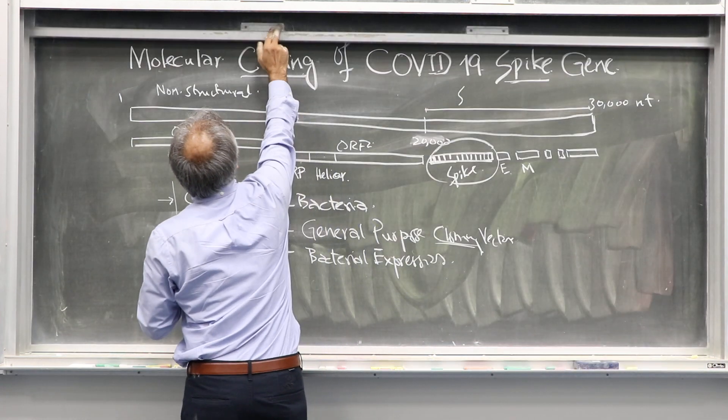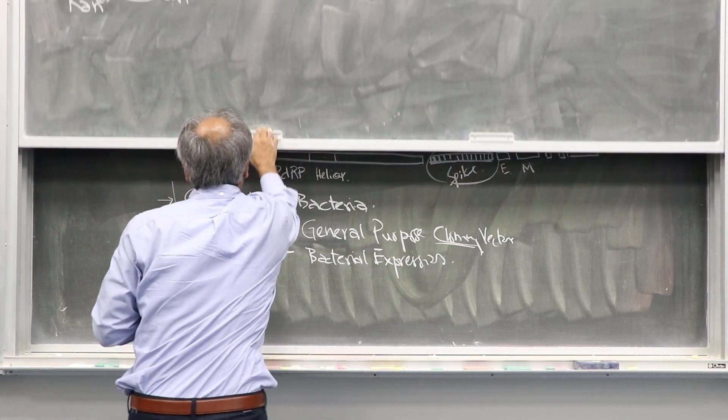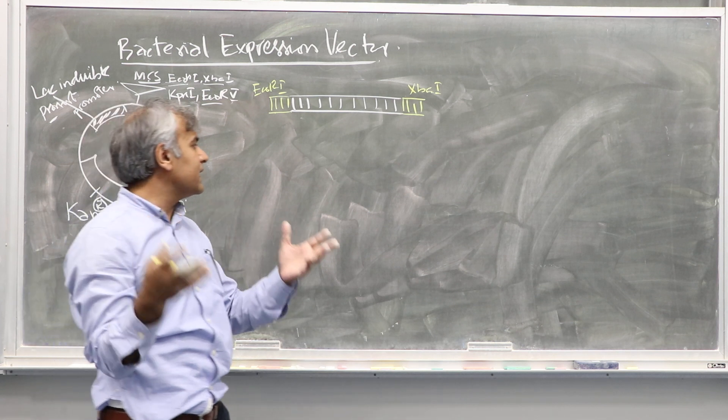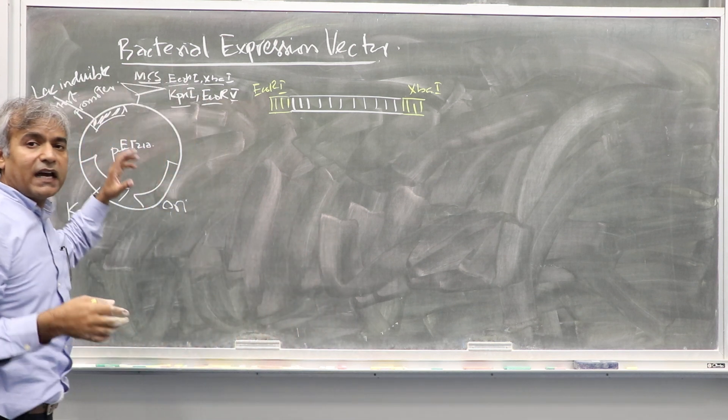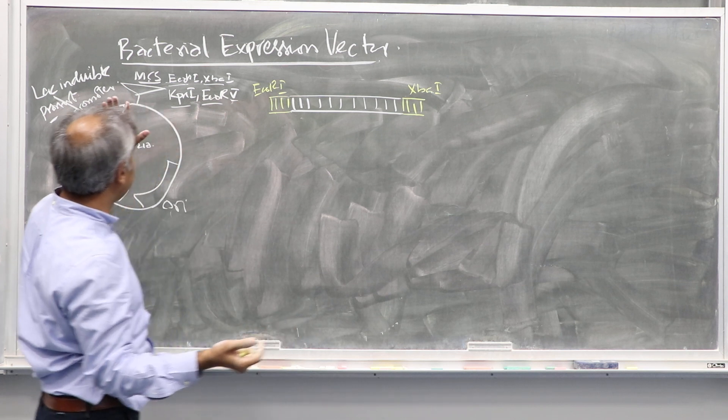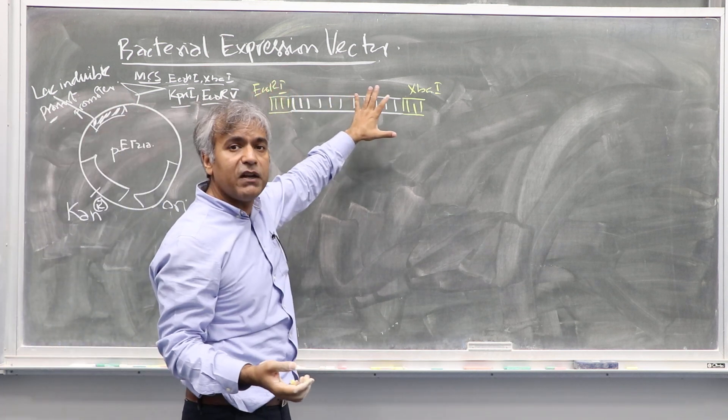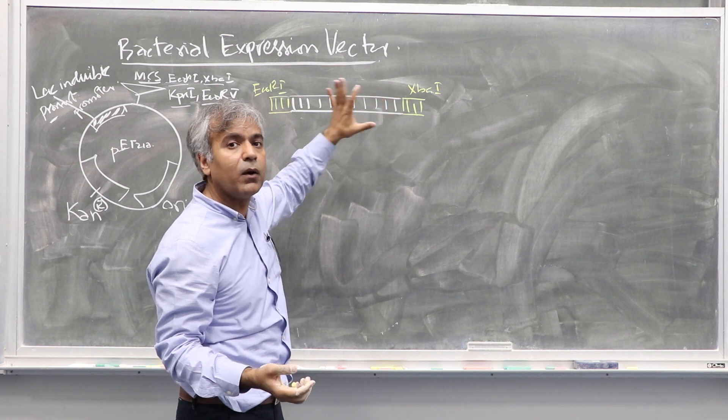Now what we are going to do once we have everything ready - I told you the design of experiment - we design primers, we finalize vectors, general purpose cloning vector, then the expression vector, and now we are going to amplify the spike gene from the cDNA.